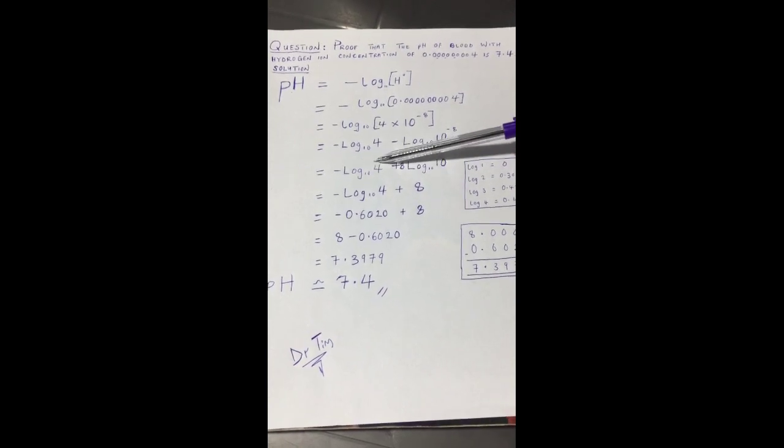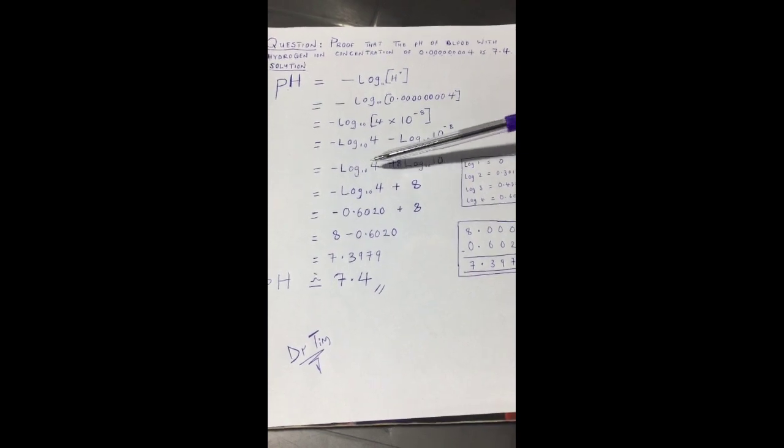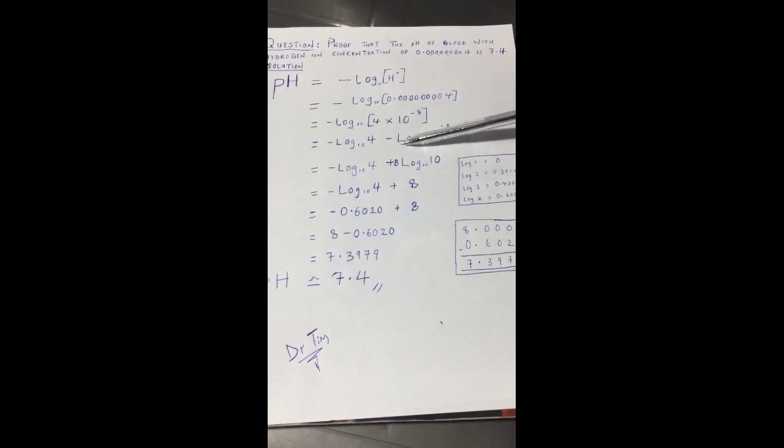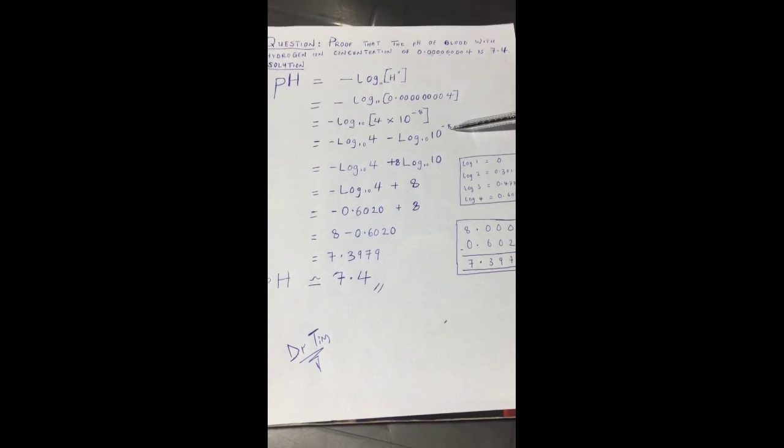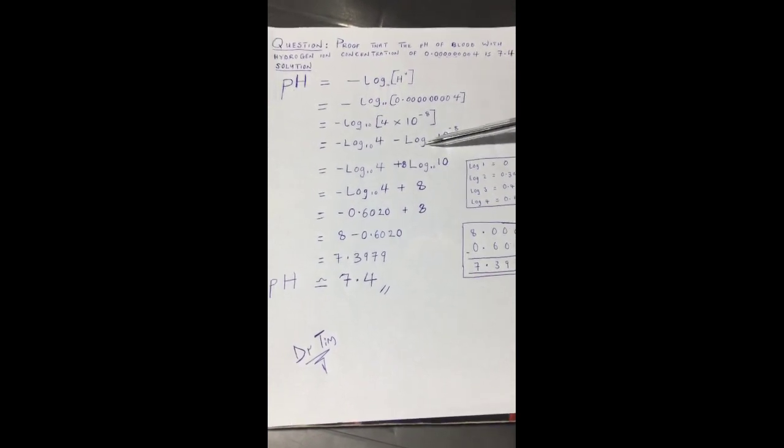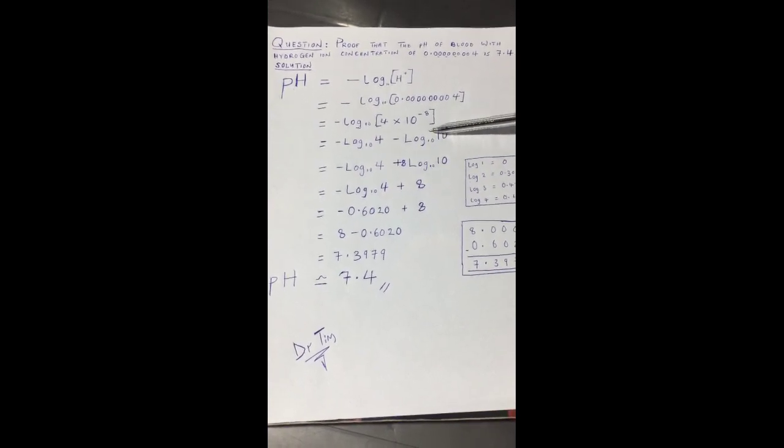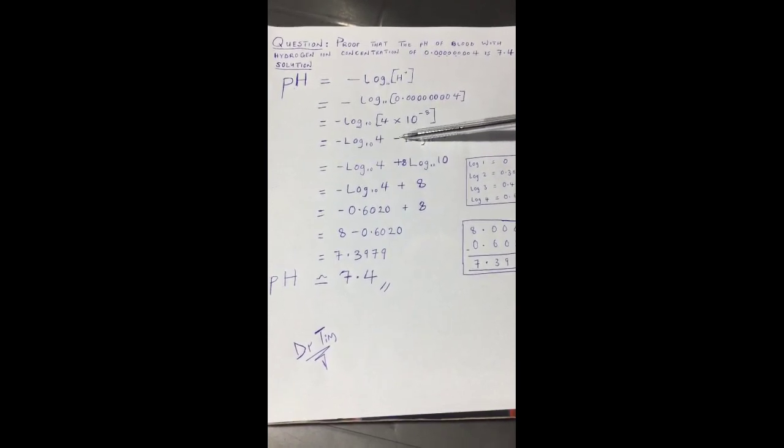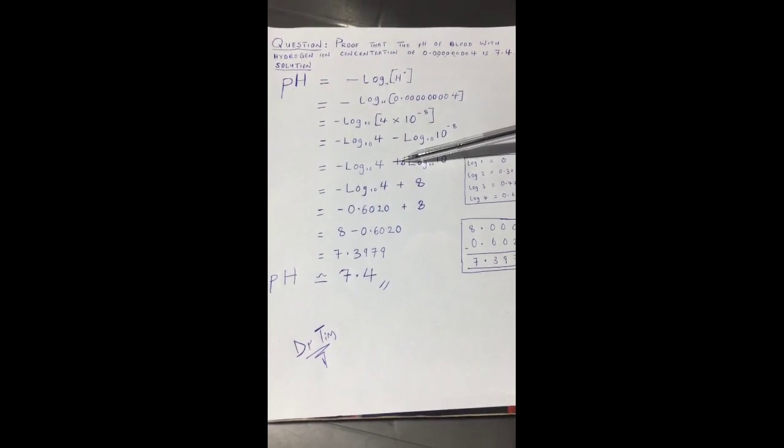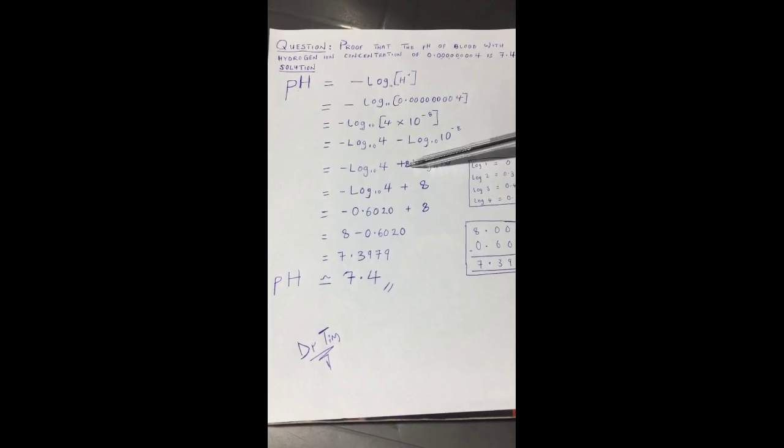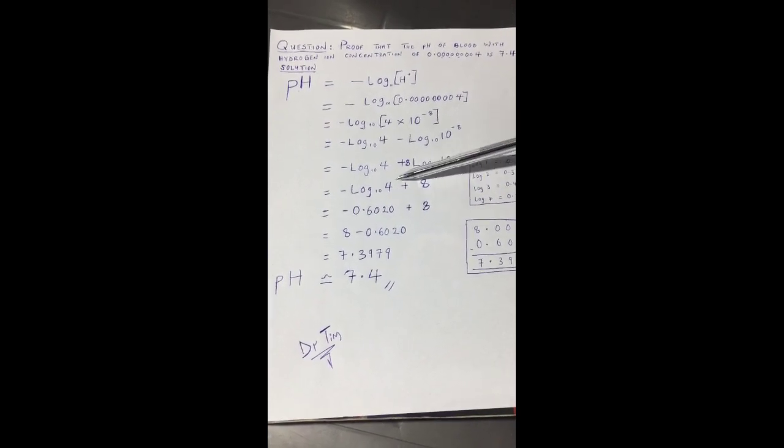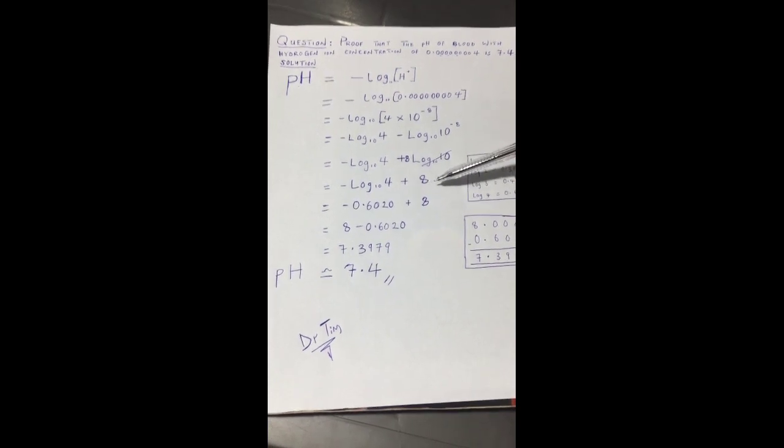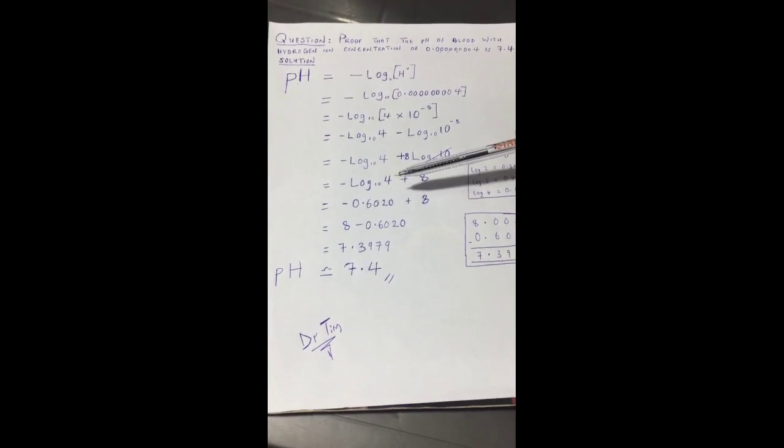Negative log to base 10 of 4, negative log to base 10 of 10 to the power minus 8. The minus 8 comes to the front. There are laws in logarithm, so when this minus 8 comes to the front, it affects this negative sign and changes it to plus because negative and negative is positive. So it comes plus 8 log 10 to the power 10. Log 10 to the power 10 is 1, so this is cancelled out. It's just negative log to base 10 of 4 plus 8.